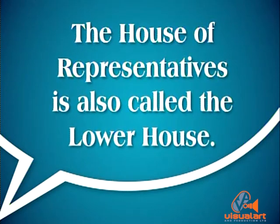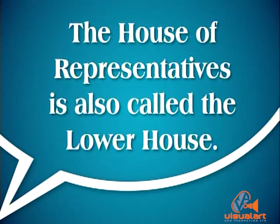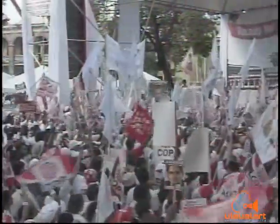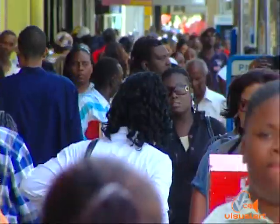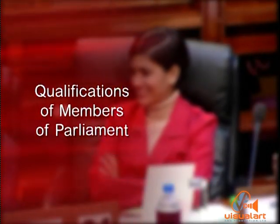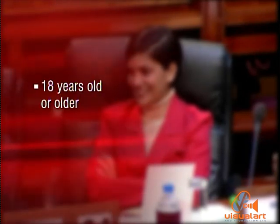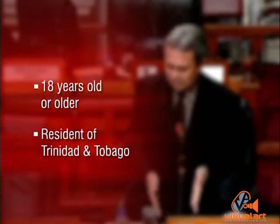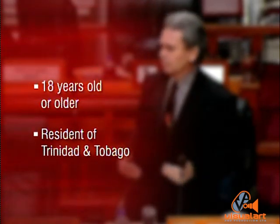The House of Representatives is also called the Lower House. The Constitution provides for election of members of the House by secret ballot and by the first-past-the-post system. This provision is not entrenched and may be altered by a simple majority. Members of the House are elected for a term of five years and must be citizens aged 18 years or older and resident in Trinidad and Tobago for two years prior to nomination for election.